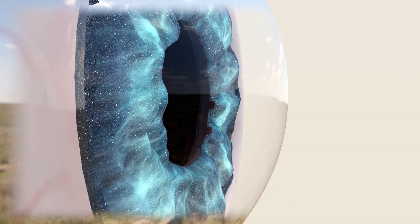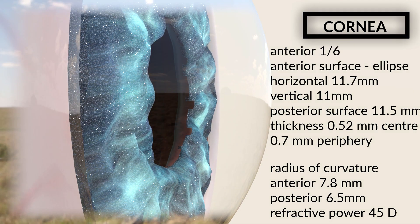The anterior one-sixth of the fibrous coat is formed by the cornea. It is one of the most transparent structures in the eye, avascular, and has a watch-glass-like structure. It is responsible for most of the initial refraction of light rays entering the eyeball and acts like a convex lens. The diameters and radii of curvature of the cornea are displayed on screen.